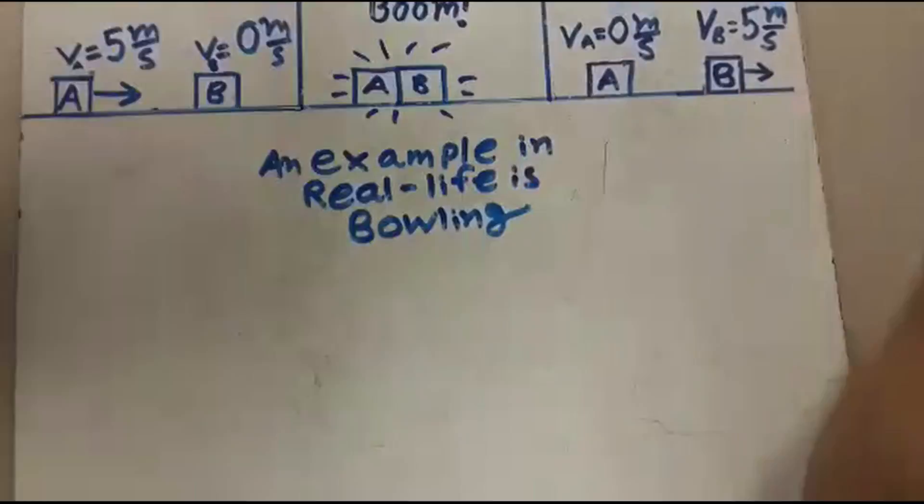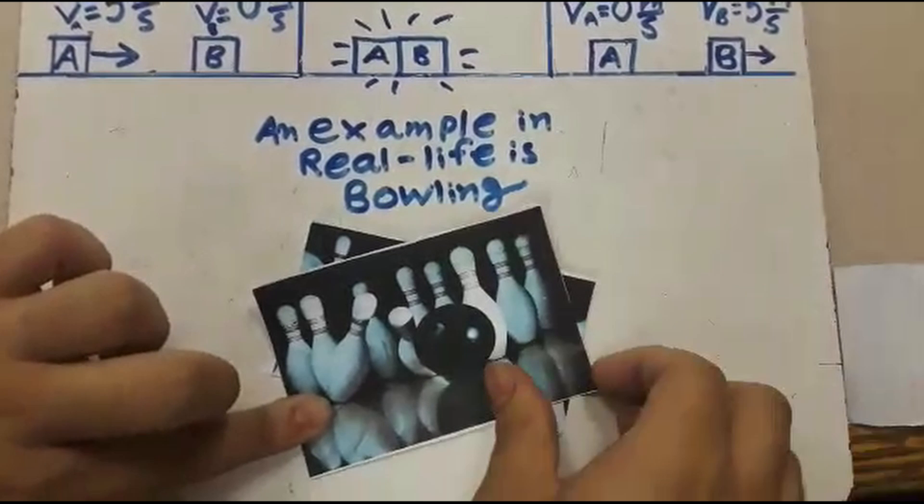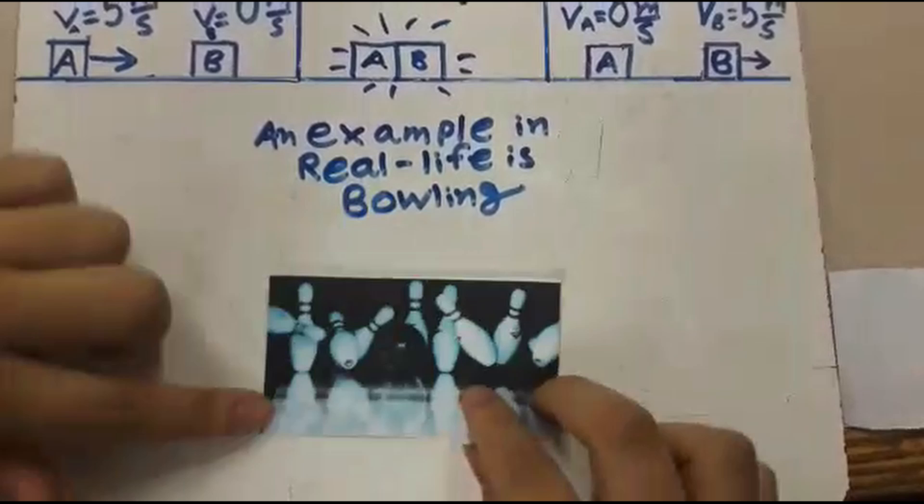Think bowling. When a bowling ball comes in contact with the pins, it delivers an impulse to them. Since the pins have a much lower mass than the ball, they get sent flying.